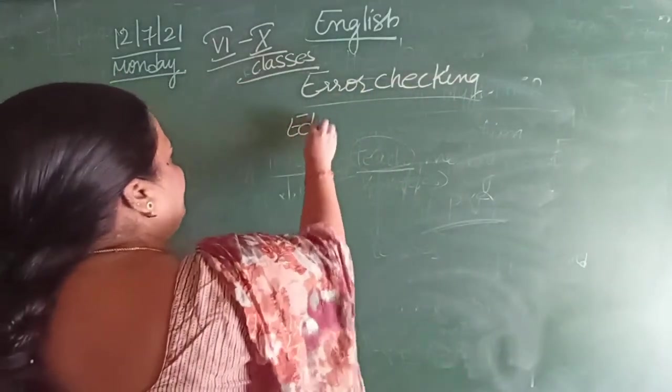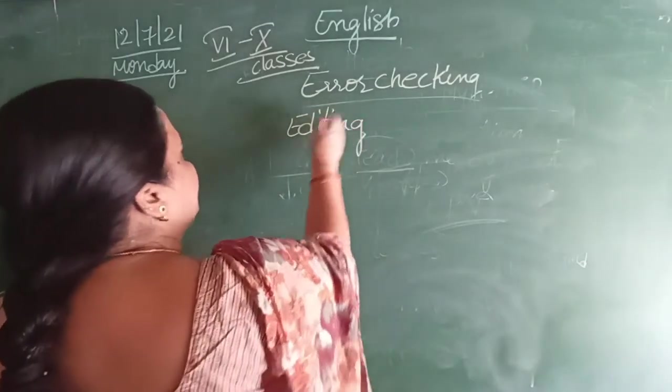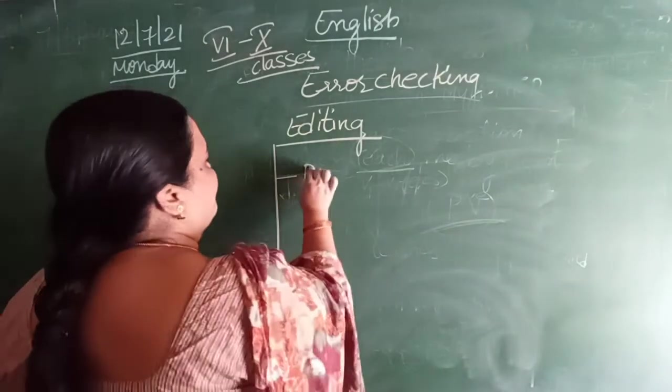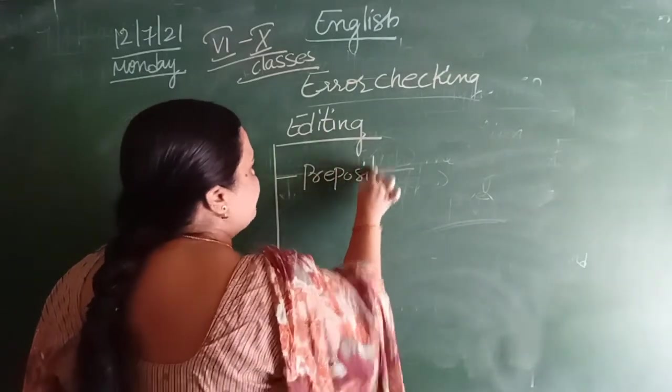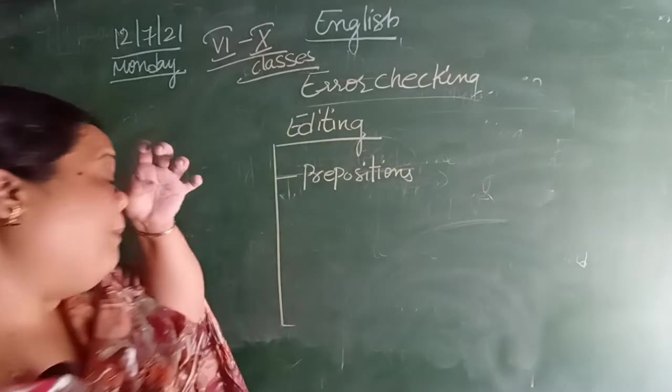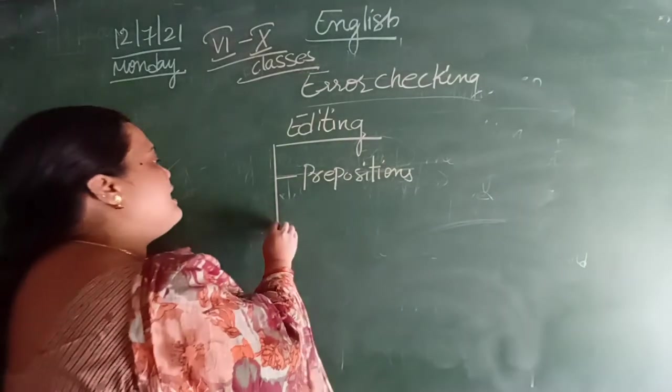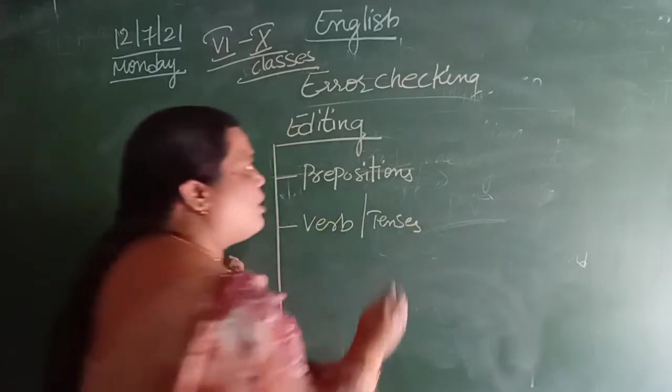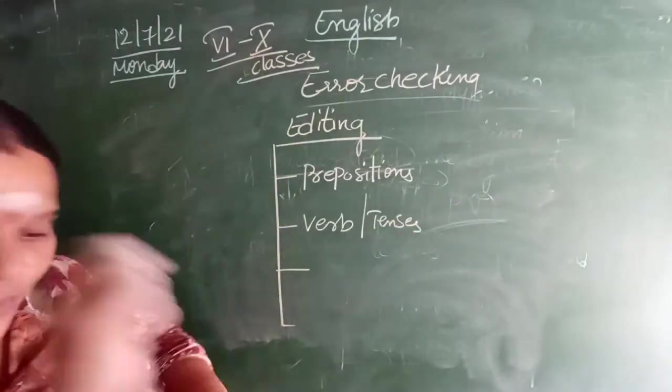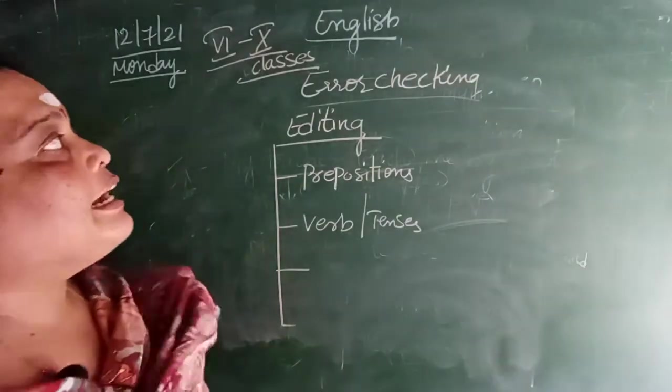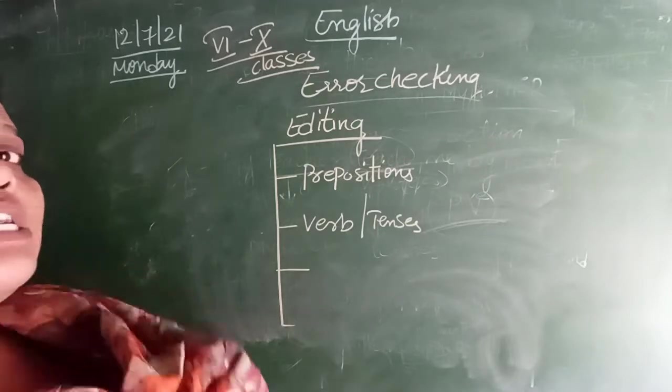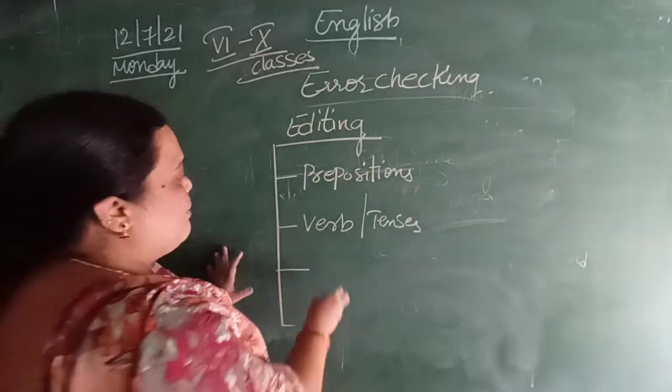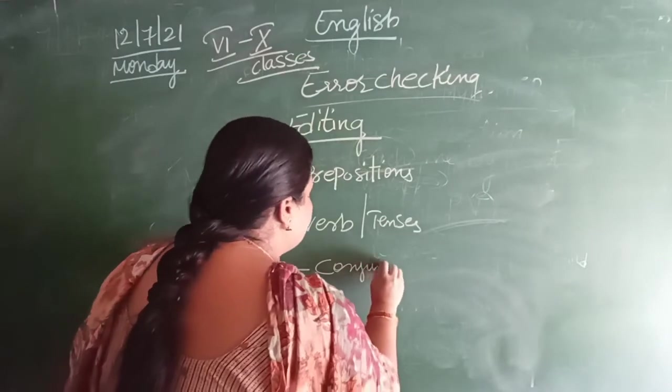See, editing. Whenever any error checking is given to you, we have to concentrate first on prepositions. First, in the given sentences or in the given paragraphs, we should concentrate on prepositions. Generally these will be given as mistakes. Next term, verb or tenses. Next we are going to check conjunction. You all know what is conjunction? Conjunction means connecting two sentences. Con means connecting. Then we are going to check conjunctions.